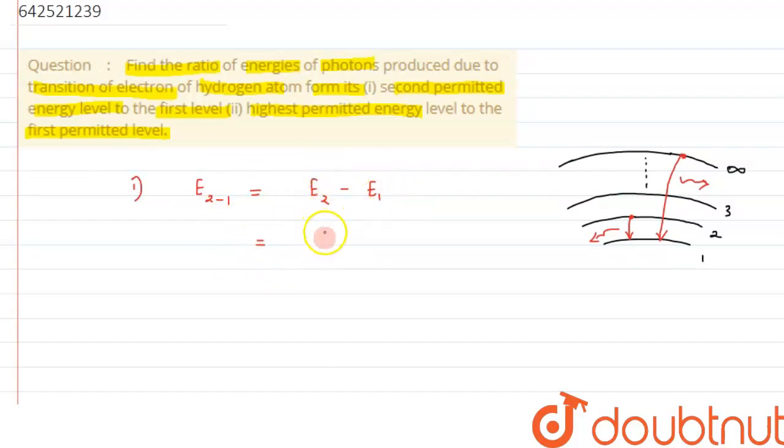This can be written as E2, that is minus 13.6 divided by 2 square. Since we know energy of the electron in orbit is given by the formula minus 13.6 divided by n square, where it will be 2 square minus 1 of minus become plus 13.6 divided by 1 square.